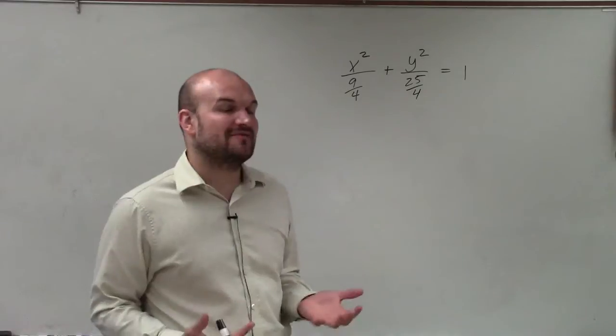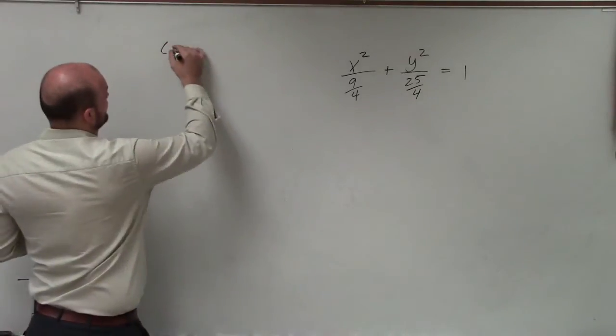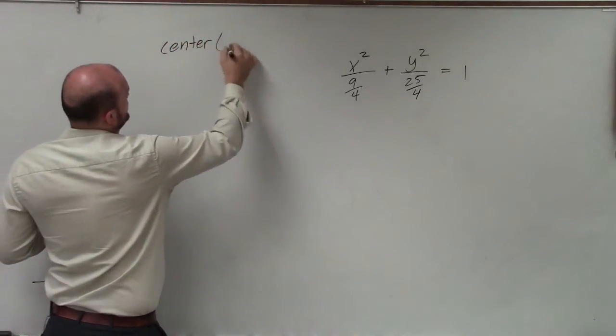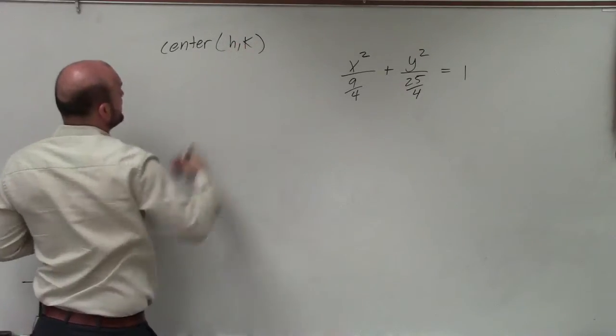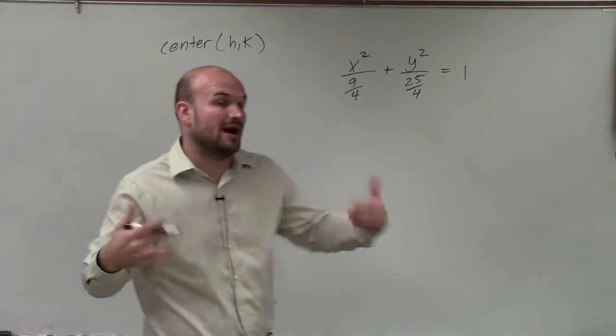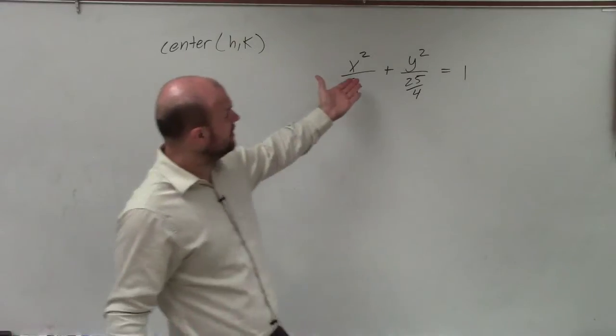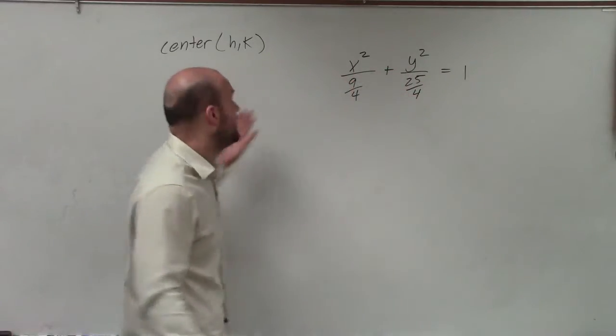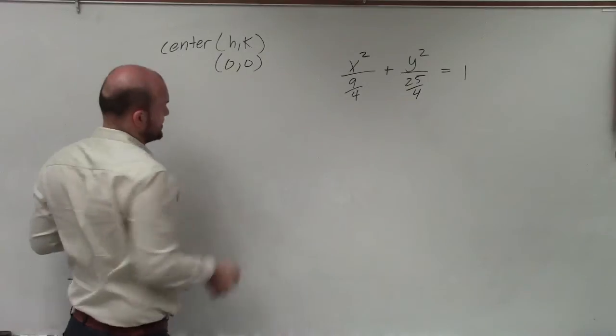Now, when we're graphing, the first thing we want to do is identify our center, which is in the form of h, k. Remember our general form is x minus h squared, y minus k squared. Well, since I see no numbers that I'm subtracting from x and y, I can reason that my center is going to be at 0, 0. And that's very nice.